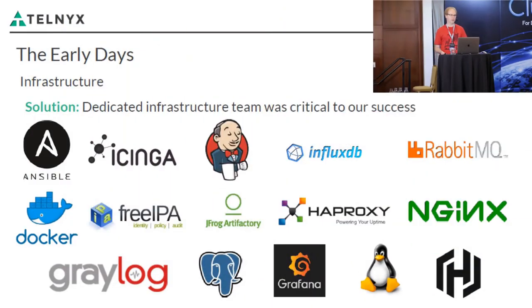Infrastructure was absolutely critical from the very beginning, and there's a lot of work to get it right. I'm not on the infrastructure team, but I really appreciate them — don't underestimate infrastructure if you're going to do microservices. Once you have high availability, automated deploys, a great CI pipeline, and monitoring and alerting, you get all of those things for free every time you create a new service and push it to production.